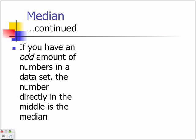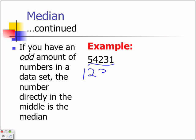If you have an odd number in the data set, the number right in the middle will be the median. So with that, there's 5 numbers. When you put them in order, 1, 2, 3, 4, the number directly in the middle is 3. So that's the median.